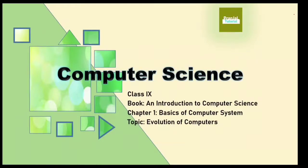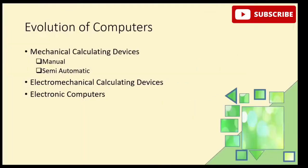When calculating devices were present before computer systems, computer systems have undergone very much development. The development of computer systems happened in three stages. First is mechanical calculating devices. Second is electromechanical calculating devices. Third is electronic computers. Today I will discuss mechanical calculating devices and electromechanical calculating devices.